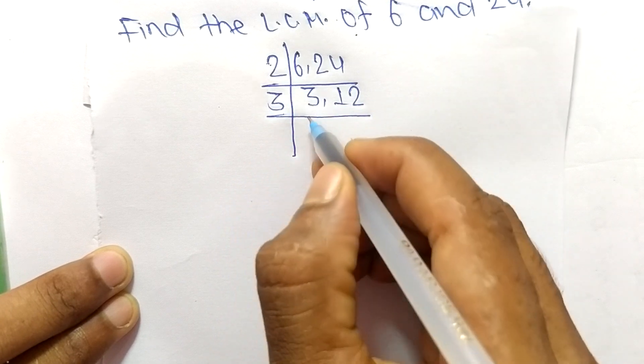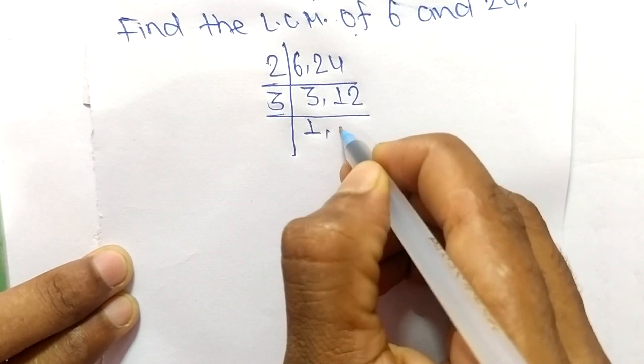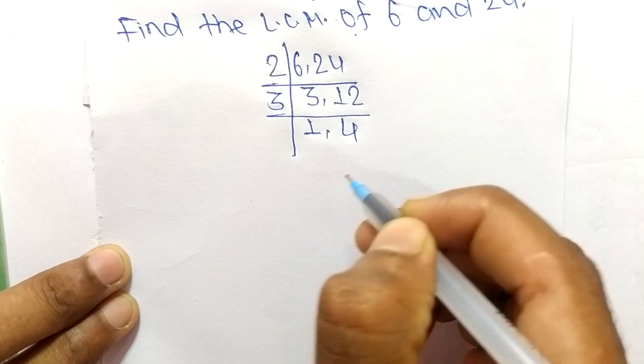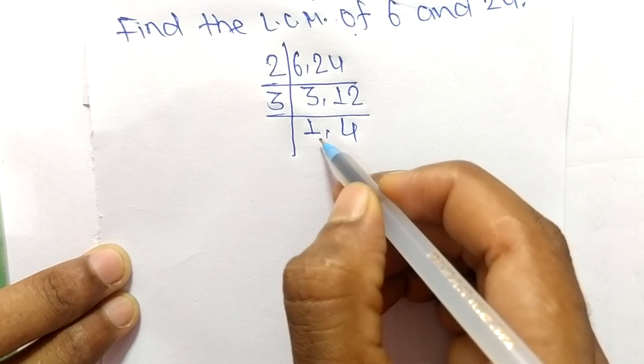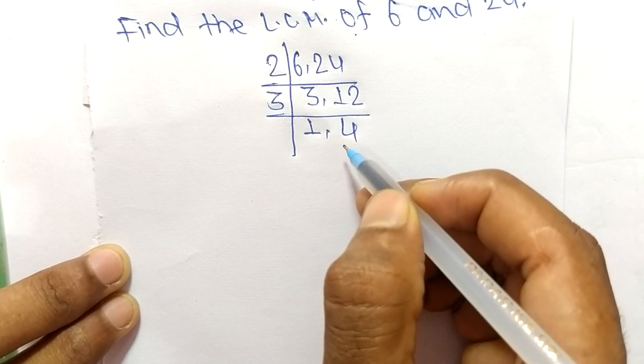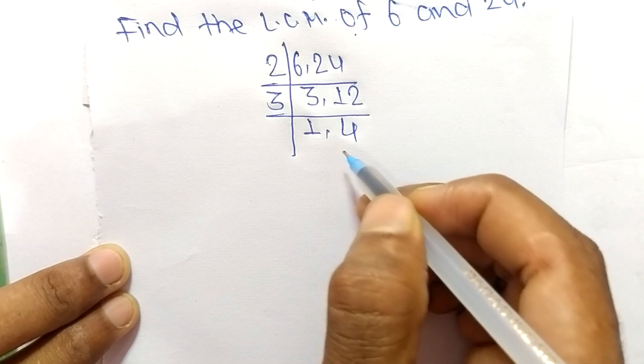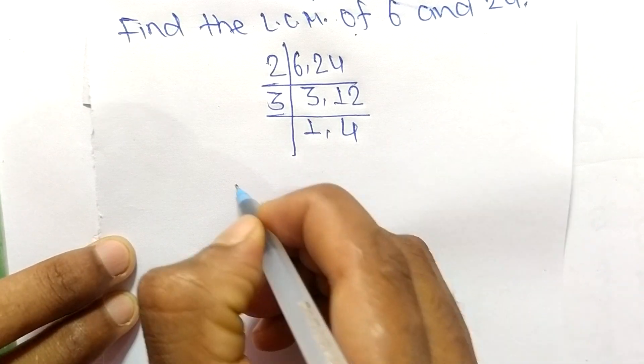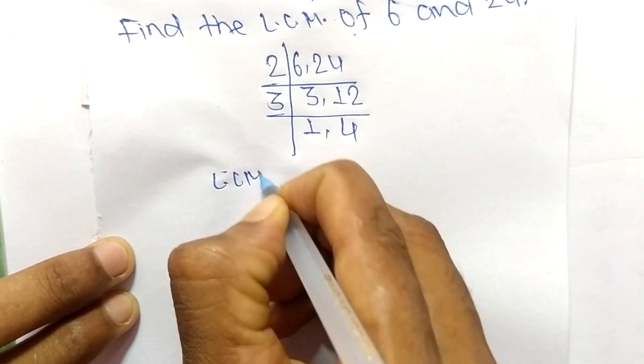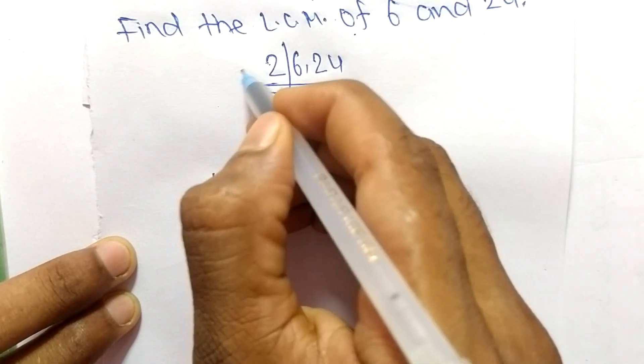3 times 1 means 3, and 3 times 4 means 12. Now we have 1 and 4, which are not exactly divisible by the same number.